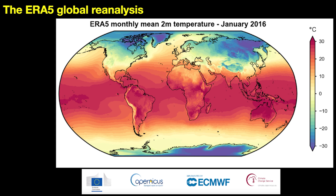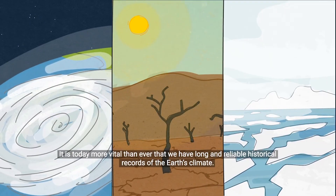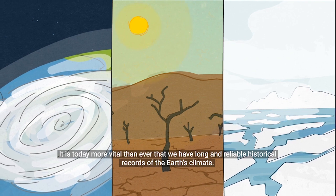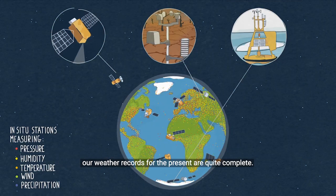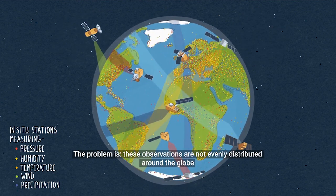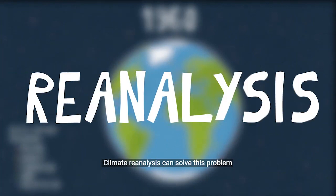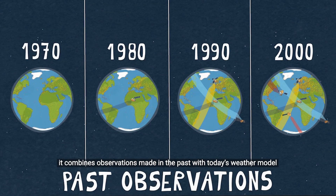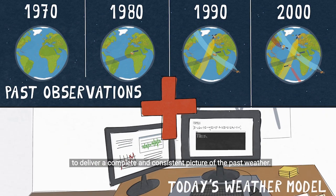To understand what a reanalysis is, listen to the following from the European Centre for Medium Range Weather Forecasts. It is today more vital than ever that we have long and reliable historical records of the Earth's climate. Thanks to the abundance of modern observation methods, our weather records for the present are quite complete. The problem is these observations are not evenly distributed around the globe. Climate reanalysis can solve this problem.